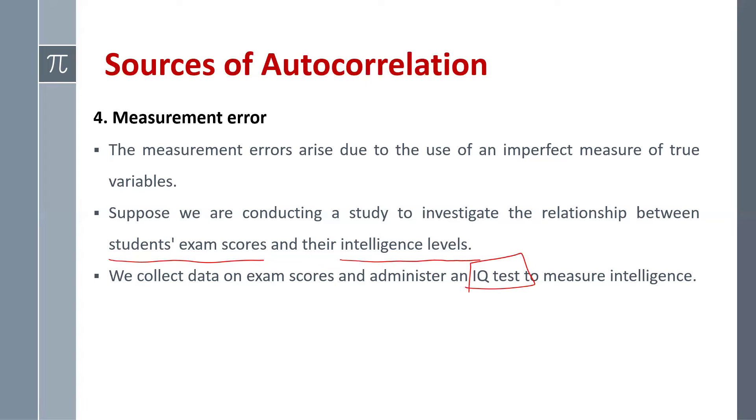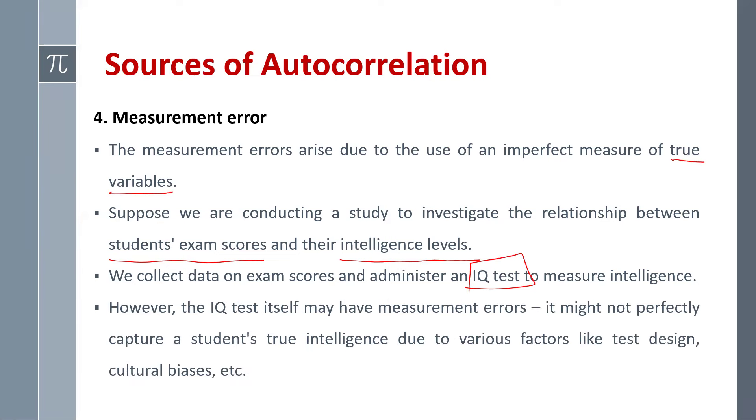So intelligence is our true variable, IQ test. Now if IQ test itself has measurement errors, then we have the autocorrelation problem or we might have the autocorrelation problem in our model.